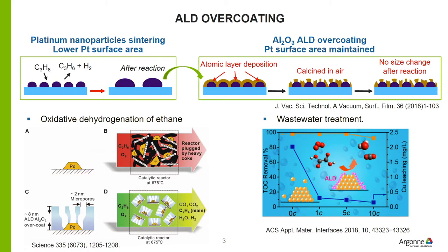This ALD overcoating technique has been studied before, like in this Science paper. After aluminum oxide ALD overcoating on Pd nanoparticles for oxidative dehydrogenation of ethane to ethylene, the palladium nanoparticle sites were stabilized. This technique has also been used in liquid phase reaction — aluminum oxide ALD overcoated on copper nanoparticles can prevent the leaching of copper into water in wastewater treatment.